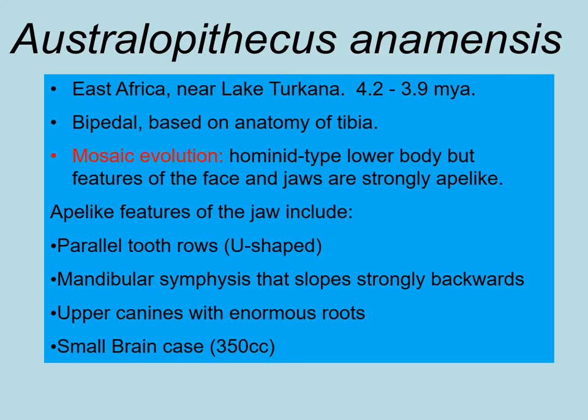Australopithecus anamensis was found in East Africa near Lake Turkana, ranging from 4.2 to 3.9 million years ago. We know they're bipedal based on tibia anatomy — another great example of mosaic evolution — with a hominid-like lower body but strongly ape-like face and jaw. Ape-like features include parallel tooth rows, a mandibular symphysis that strongly slopes backwards, enormous upper canine roots, and a brain case even smaller than a modern chimpanzee's.